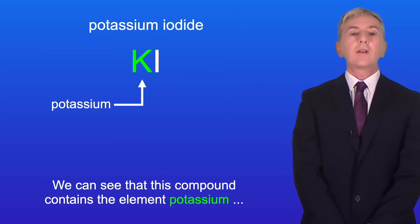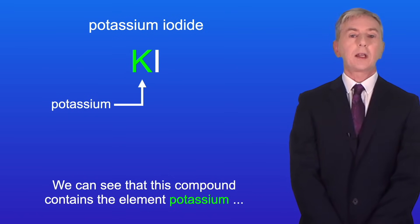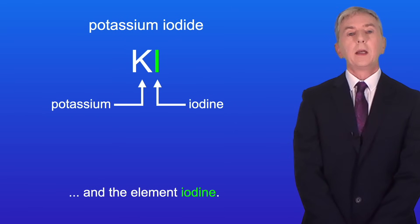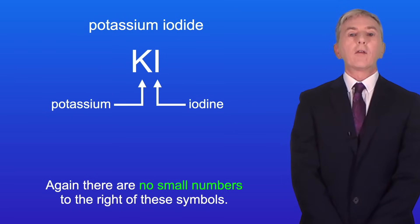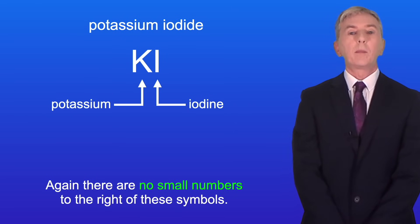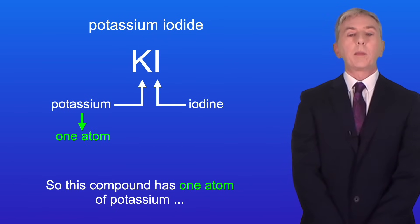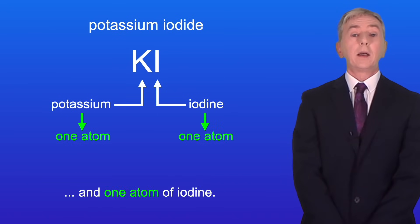Okay, we can see that this compound contains the element potassium and the element iodine. Again there are no small numbers to the right of these symbols, so this compound has one atom of potassium and one atom of iodine.